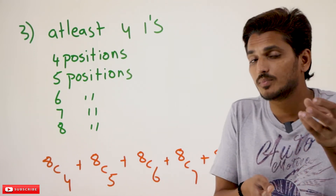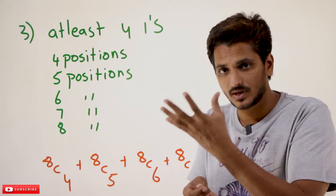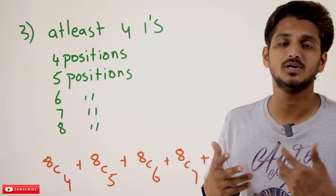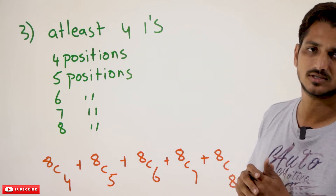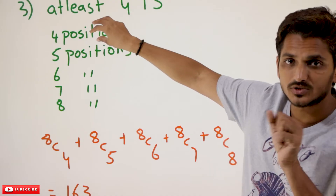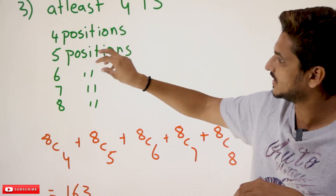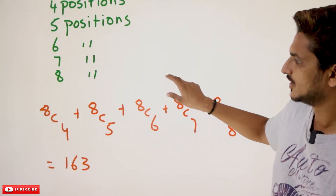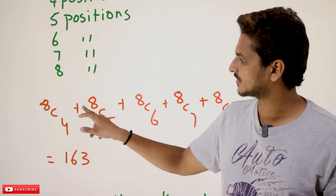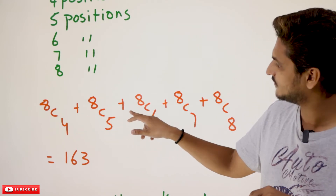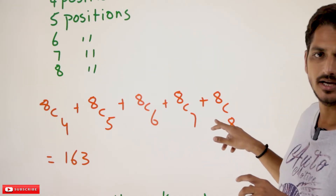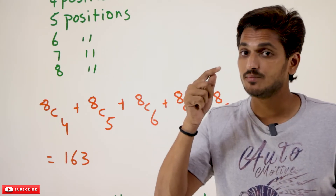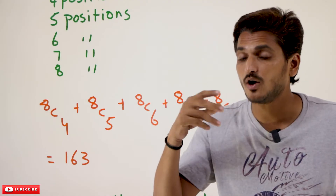Now the next one: at least four ones. At least four ones means you can place 4, 5, 6, 7, or 8 ones — all these are valid possibilities. So you need to select 4 positions, or 5, or 6, or 7, or 8. That gives us: 8C4 + 8C5 + 8C6 + 8C7 + 8C8. We use addition here because each case is a separate possibility.